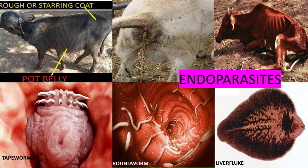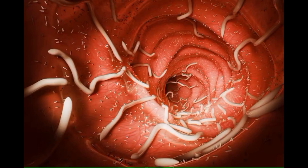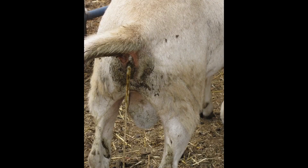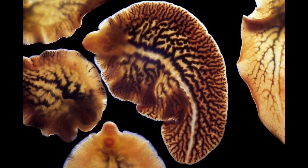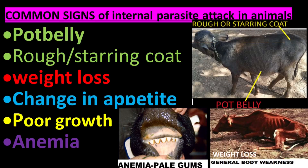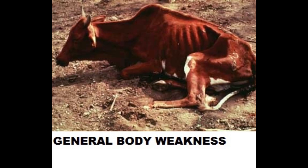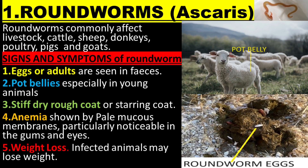Signs and Symptoms of Parasite Infection in Livestock. The main parasite types covered are Round Worms, Tape Worms, and Liver Flukes. Common signs of parasite attack in animals include potbellied condition, weight loss, change in appetite, poor growth, and anemia.